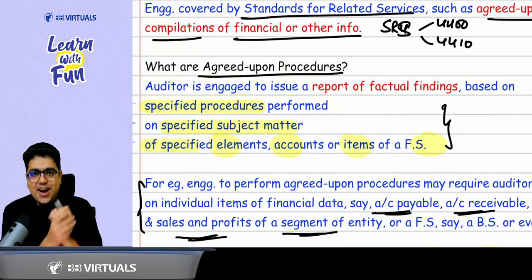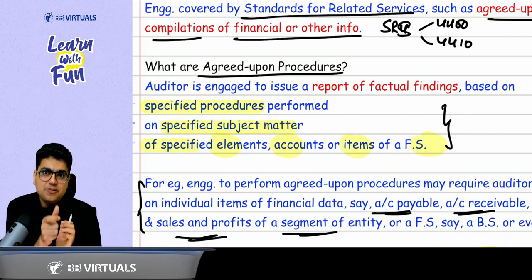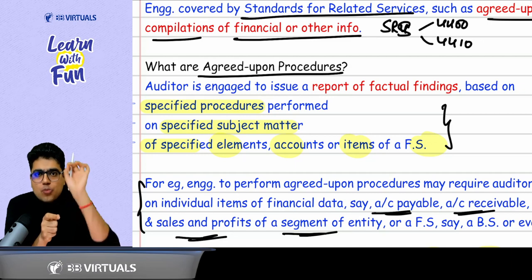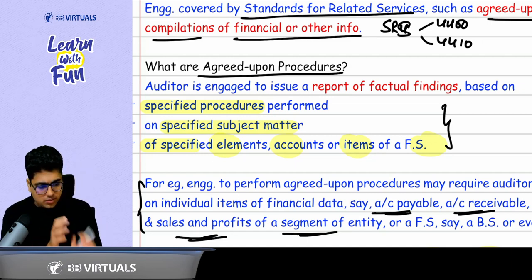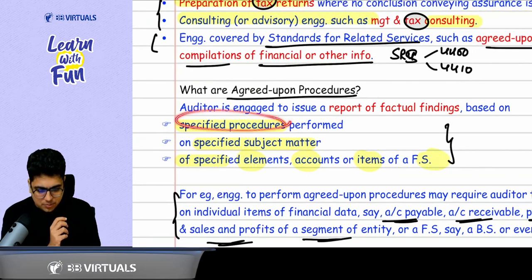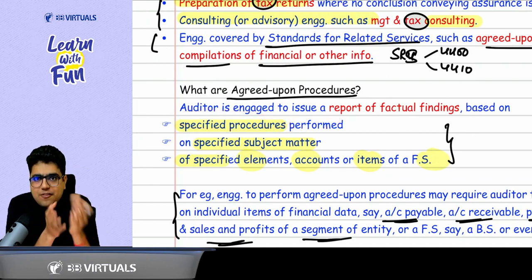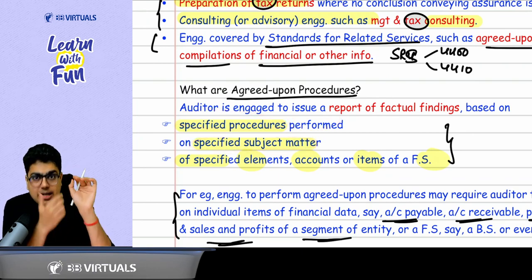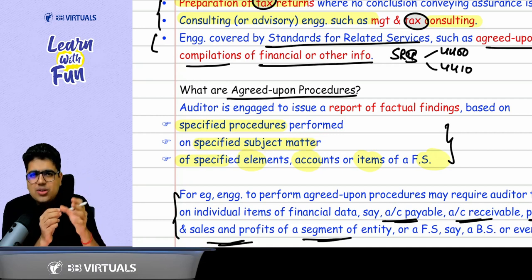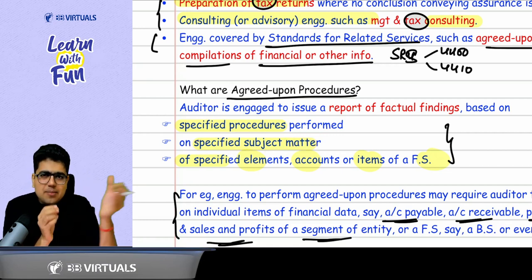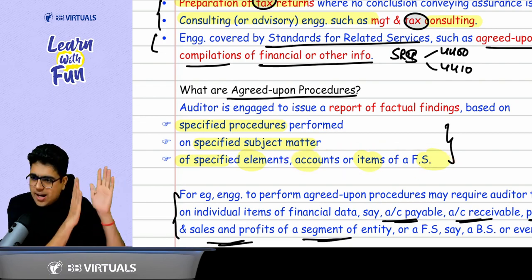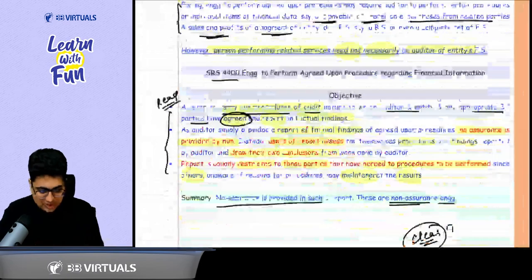How you report those factual findings by performing the specific procedures? Whatever procedures are being instructed to you, only those procedures you have to perform. So based on the specified procedures performed on what? I have to perform the procedures on specified matter, specified matter of account, item or element of financial statement like debtors, creditors, related party, etc.